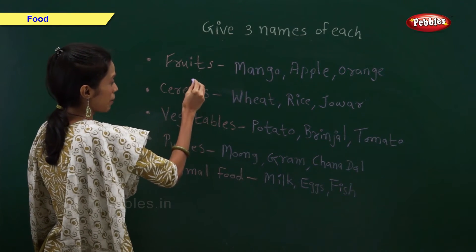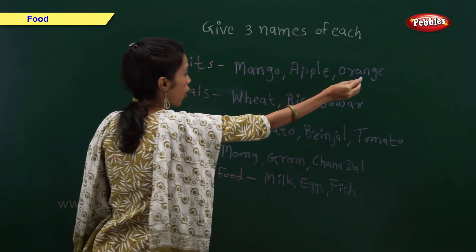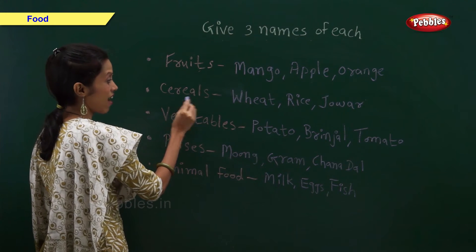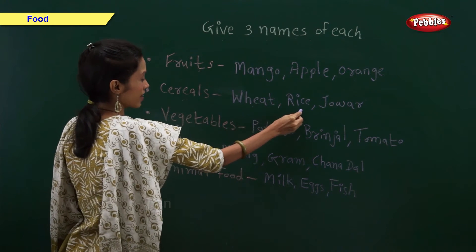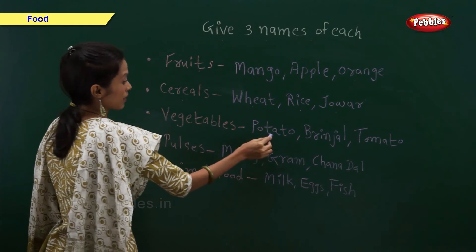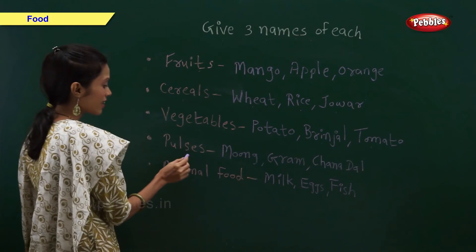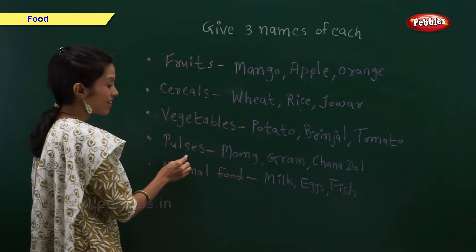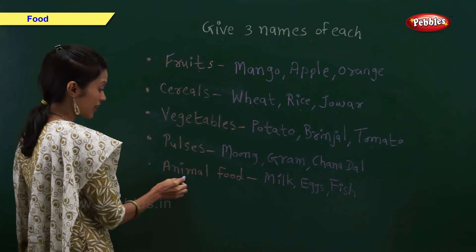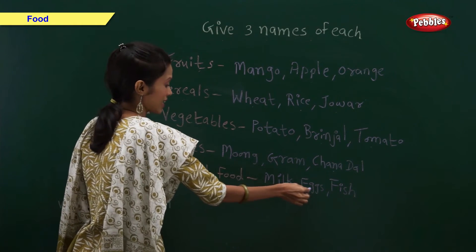So, three examples of fruits are mango, apple, and orange. Three examples of cereals are wheat, rice, and jawar. Three examples of vegetables are potato, brinjal, and tomato. Three examples of pulses are moong, gram, and chana dal. And three examples of animal food are milk, eggs, and fish.